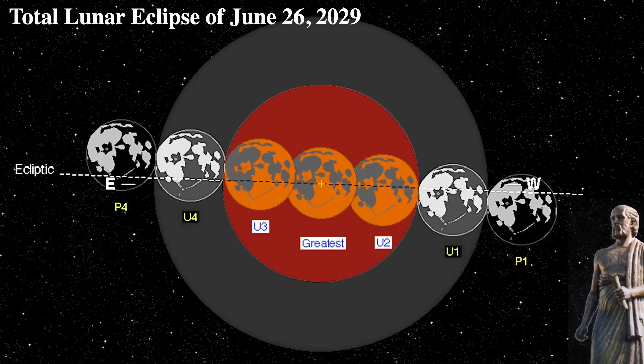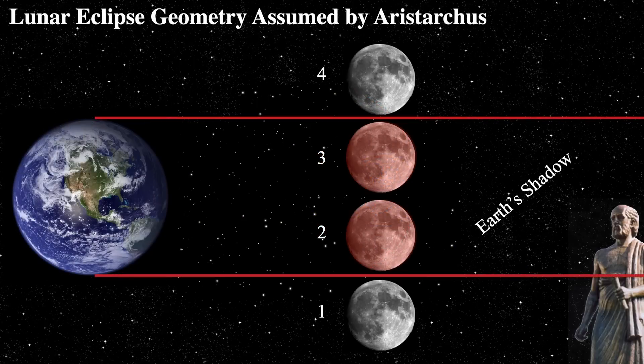So he thought that because the length of totality of the lunar eclipse was about twice that of the time it takes to go from first contact to second contact, then he determined that roughly the moon is about half the size of the earth. Well,